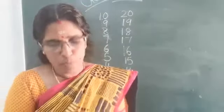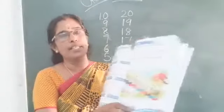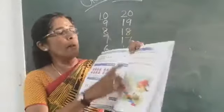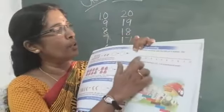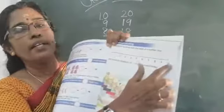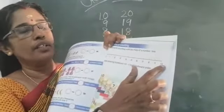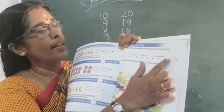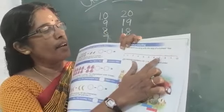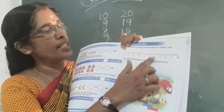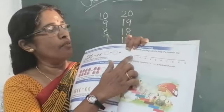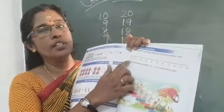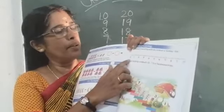All of you take your textbook page number 36. On the number line you see 10 — backward counting. Now go: 10, 9, 8, 7, 6, 5, 4, 3, 2, 1, 0. How do you count?